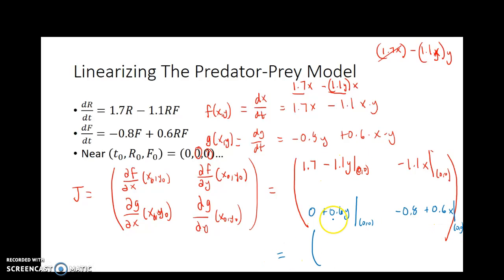If I plug in 0 for x here, I just have 0. If I plug in a 0 here, I have 0. And if I plug in a 0 here, I have negative 0.8. So that means my Jacobian matrix is this matrix right here.